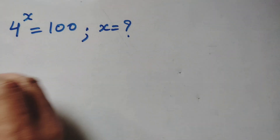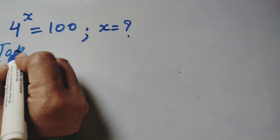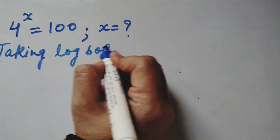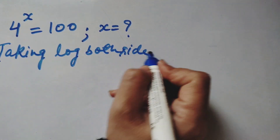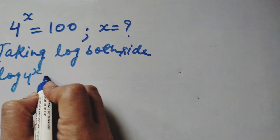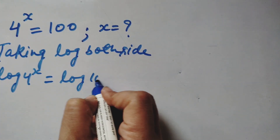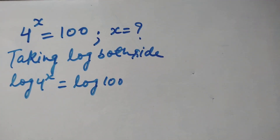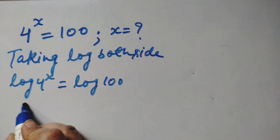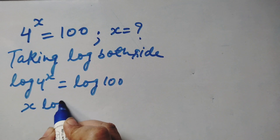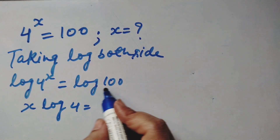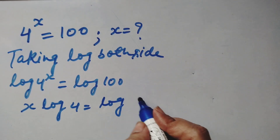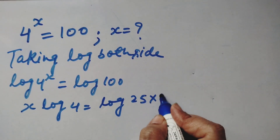First of all we will take log both sides. So log 4 power x equals to log of 100. Now x will come in front of log, giving us x times log 4. And log 100 — we can write this as log of 25 into 4.